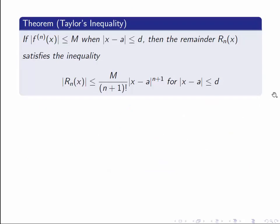Taylor's inequality is quite a complex statement. It says: if we can find a number M which is greater than or equal to the value of any of the higher derivatives of f evaluated at x on some interval centered around a and of radius d, then the remainder R_n of x will be bounded. The absolute value of R_n of x will be less than or equal to M over (n+1) factorial times (x minus a) to the n plus 1, for values of x in that same interval.